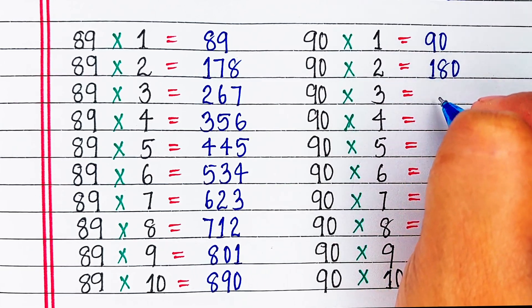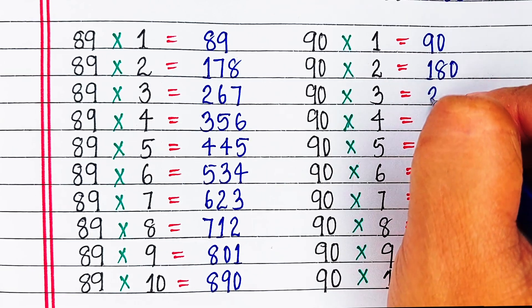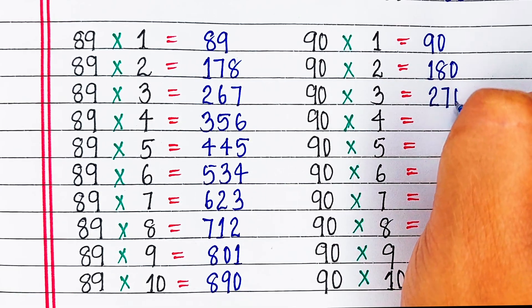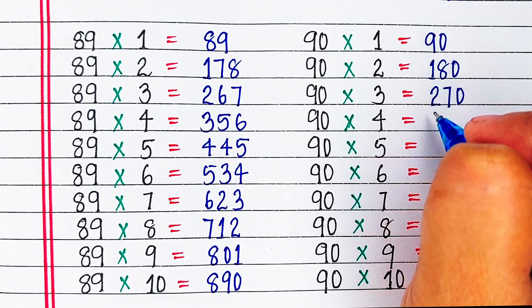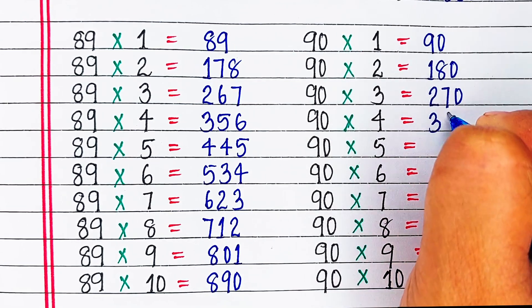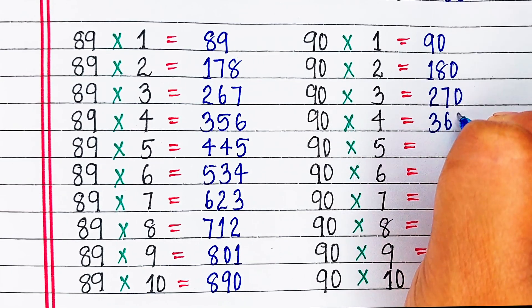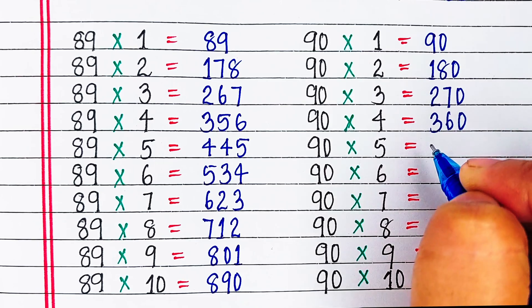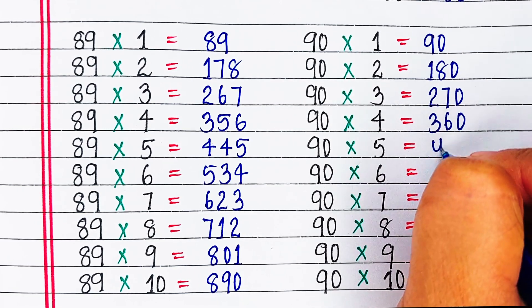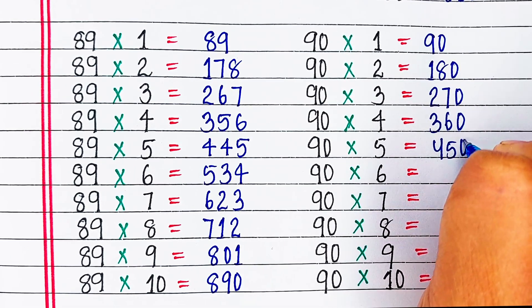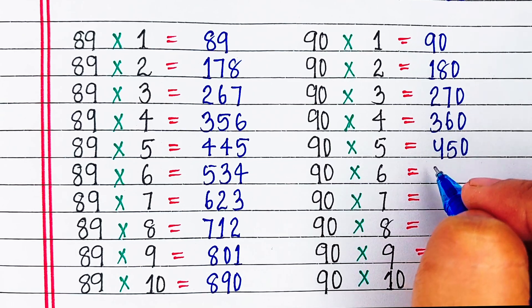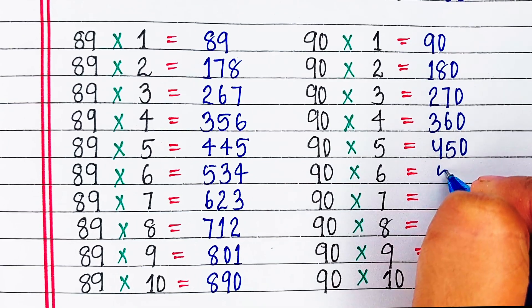90 1s are 90, 90 2s are 180, 90 3s are 270, 90 4s are 360, 90 5s are 450.